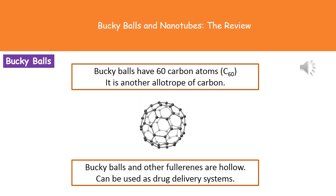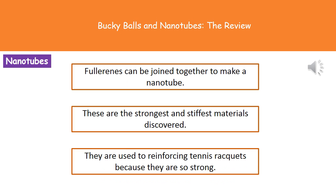A common question you're going to be asked about these different allotropes of carbon is to identify one from three given structures. Just remember: diamond is the triangle shape, graphite is the stacks of layers, and the buckyball is the ball shape.